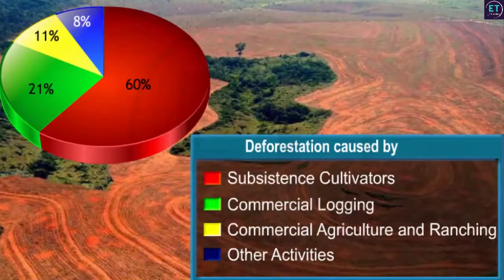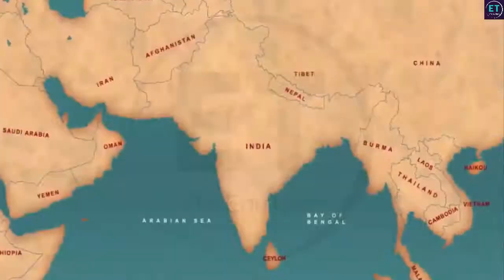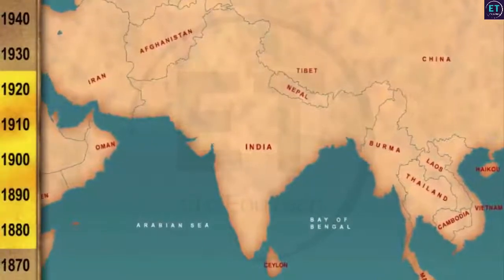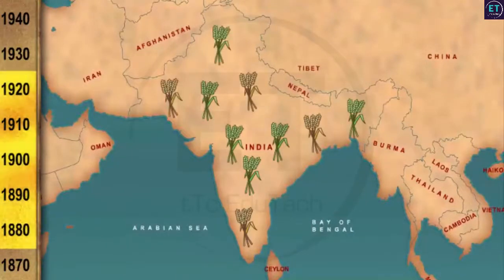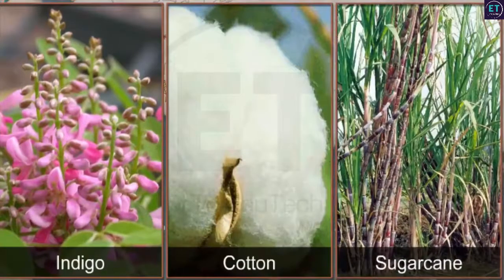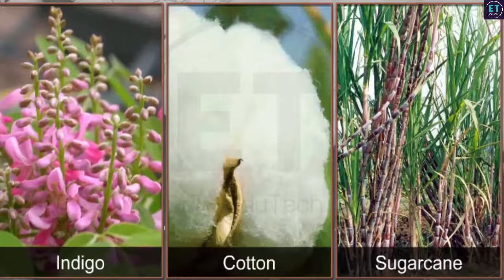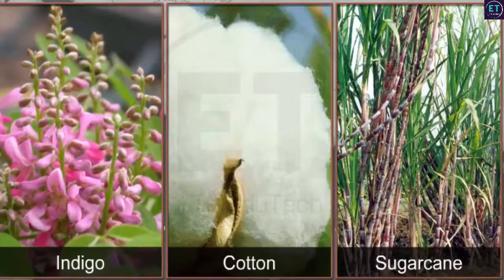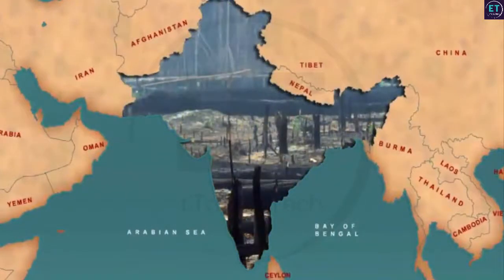Major deforestation in India occurred during the British rule between the years 1880 and 1920. The British grew many cash crops in India like indigo, cotton, jute and sugar to increase revenue. As the demand for these products increased, the need for land also increased. The net result was that forests were cleared for cultivation. Taxes were also levied on this land, which was additional revenue for the British.